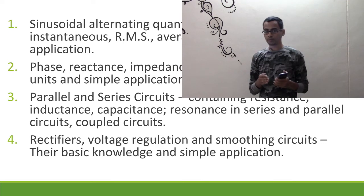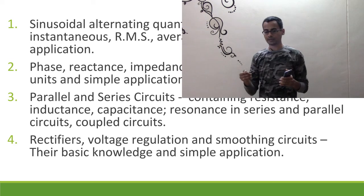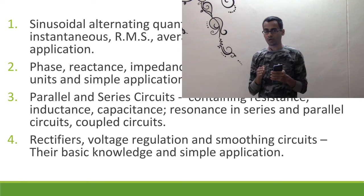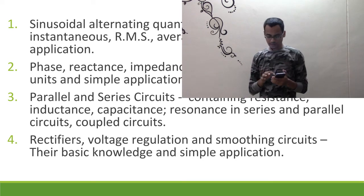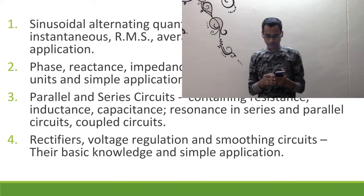Then we come to a very important topic: rectifiers, voltage regulation and smoothing circuits. Most radios are driven by direct current but are often supplied with alternating current. The device which converts AC to DC is called a rectifier, so it's very important to understand what a rectifier is and how good a rectifier performs. This completes the very basics of radio equipment — we now understand basic components and how the radio is powered.